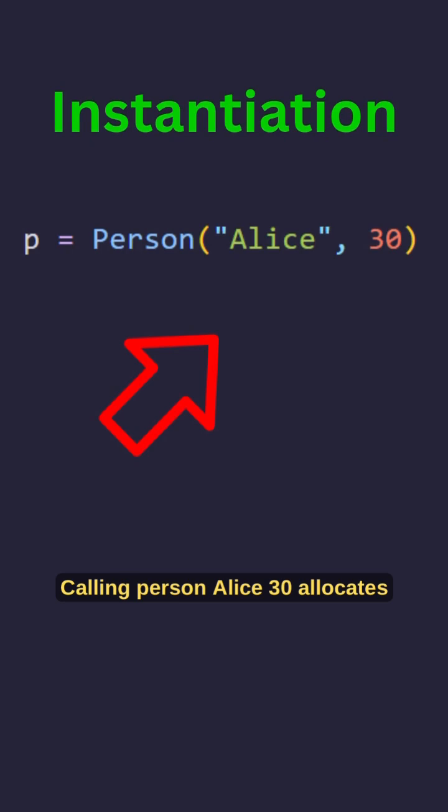Calling Person Alice 30 allocates a new object, invokes your DunderInit and returns the fully initialized instance P.